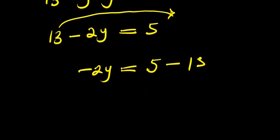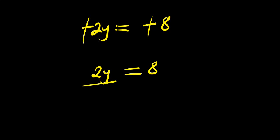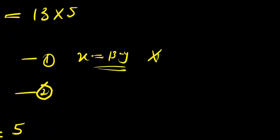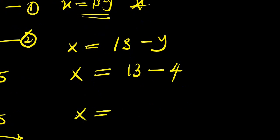From 13 minus 2y equals 5, we get minus 2y equals 5 minus 13, which is minus 8. Negative cancels negative, so 2y equals 8. Dividing both sides by 2, y equals 4. Substituting back into x equals 13 minus y: x equals 13 minus 4, so x equals 9. Our x is 9 and y is 4.